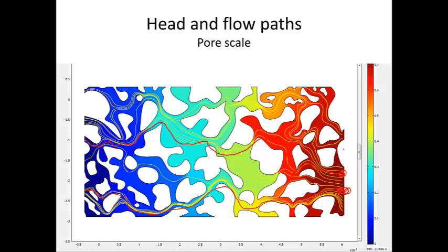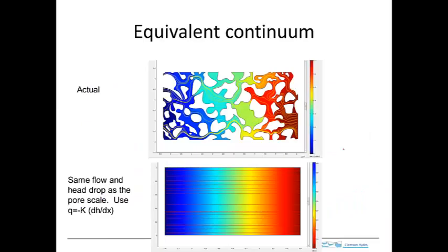If what we're interested in is understanding how the flow works at the millimeter scale, we can do it. There are tools for this kind of analysis. We have to know the specific geometry of the pore structure, and in some cases we can determine that using x-ray CT scanners, like medical imaging systems. It's expensive, but possible. However, that would only work for a millimeter or maybe a few millimeters. If we wanted to analyze something at the scale of an aquifer, we can't do it.